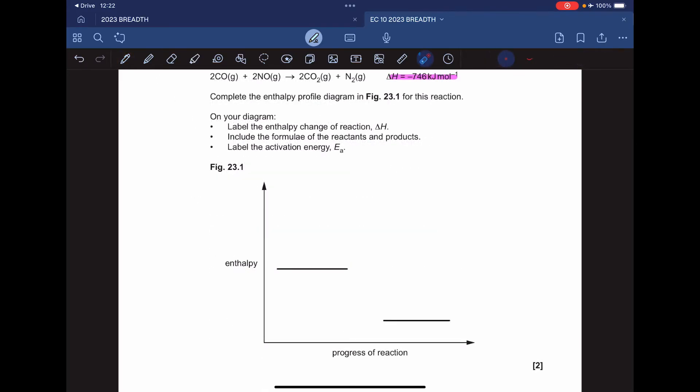Moving on to the next part, we've got to draw the enthalpy profile diagram for this reaction. You can see I've highlighted the enthalpy change: it's minus 746, so that means it's an exothermic reaction. Our reactants need to be higher in enthalpy than our products.